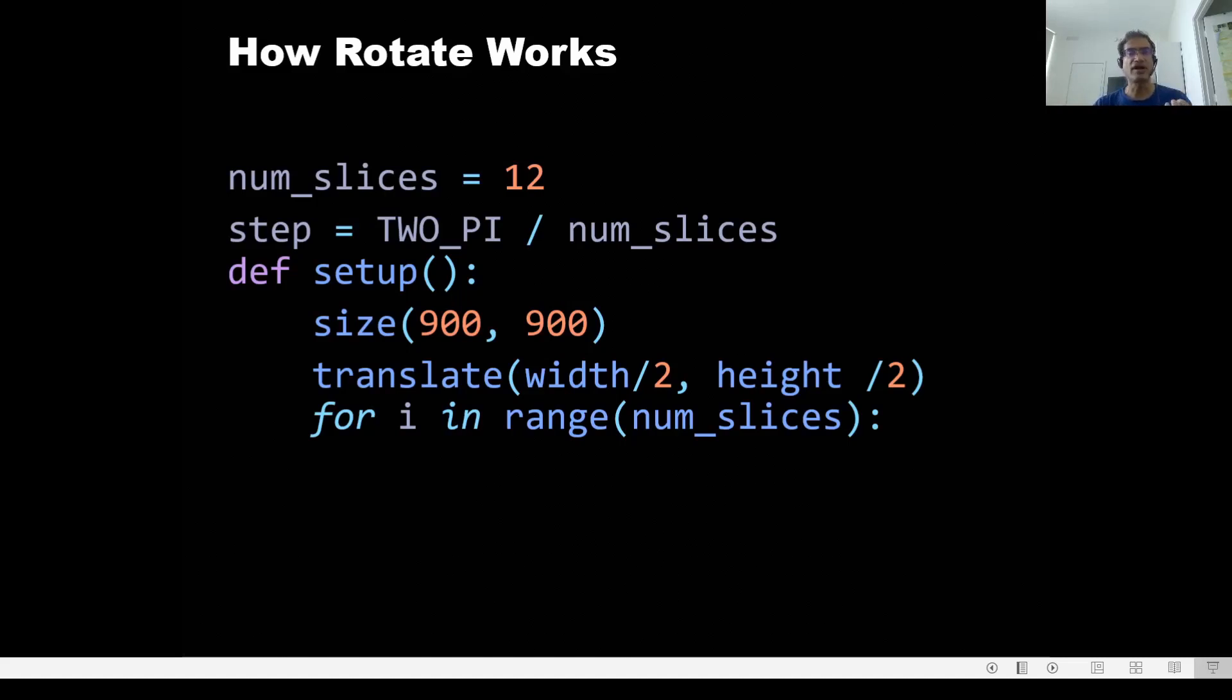And for each value of i, I'm saying, hey, you know what, rotate by step, rotate by 30 degrees, rotate by 2 pi divided by 12. So each time the processing execution comes here, it will rotate further. And after rotating, it's going to draw one line. So think of what is going on. This loop will be executed 12 times. So 12 times I'm going to rotate my axis and I'm going to draw the same line.